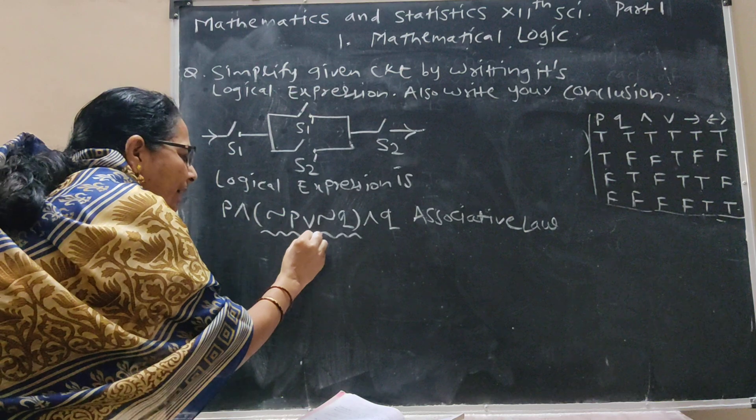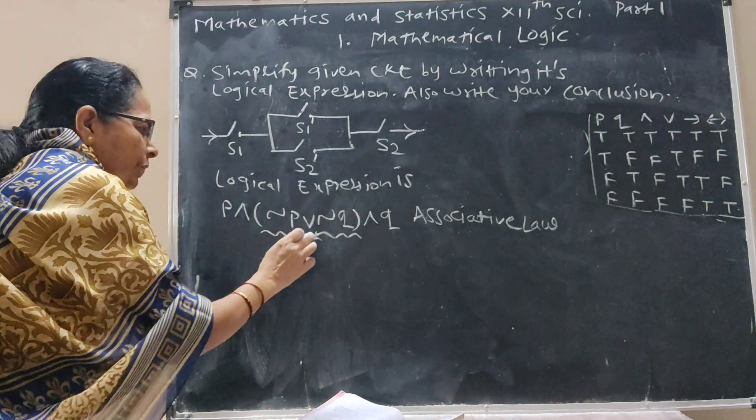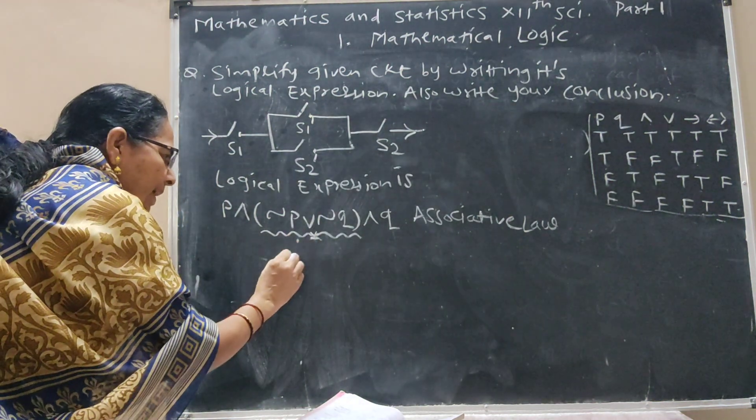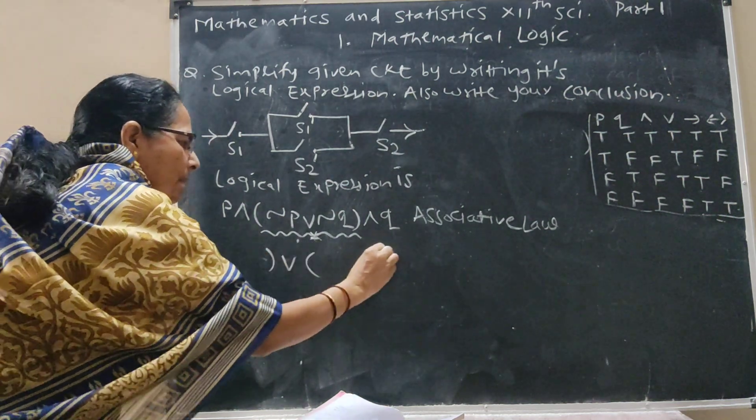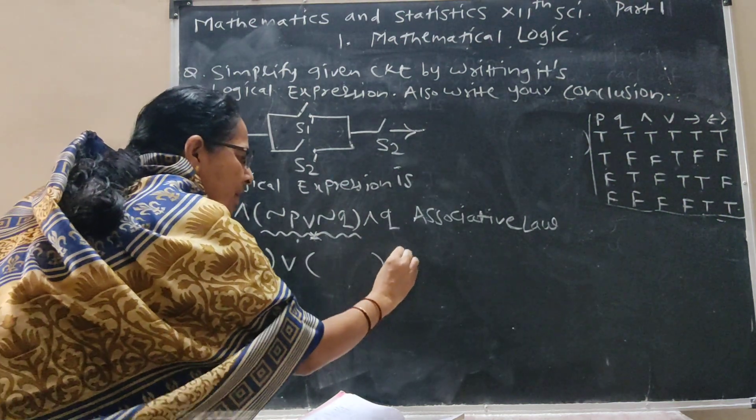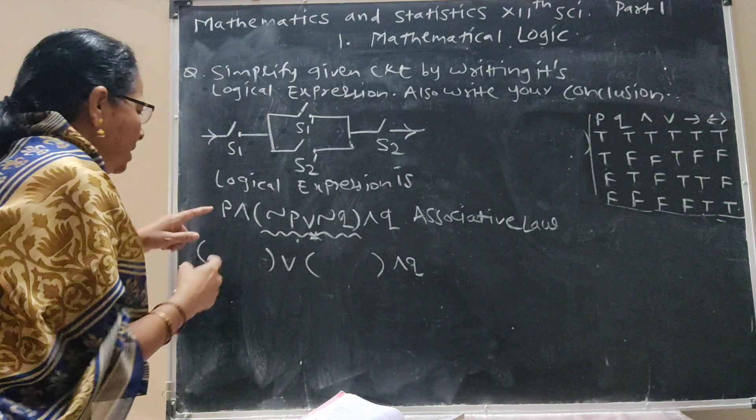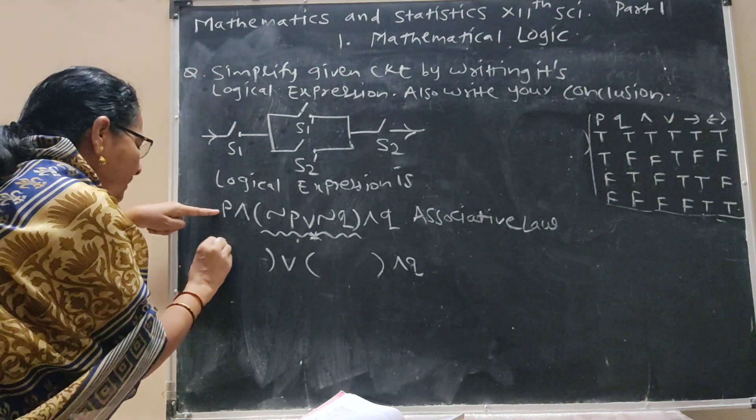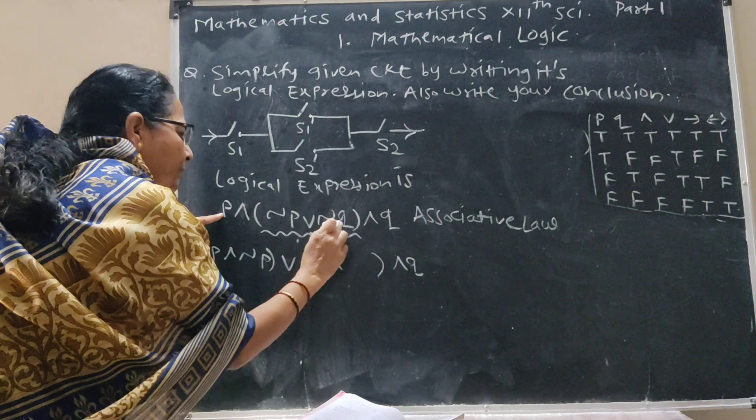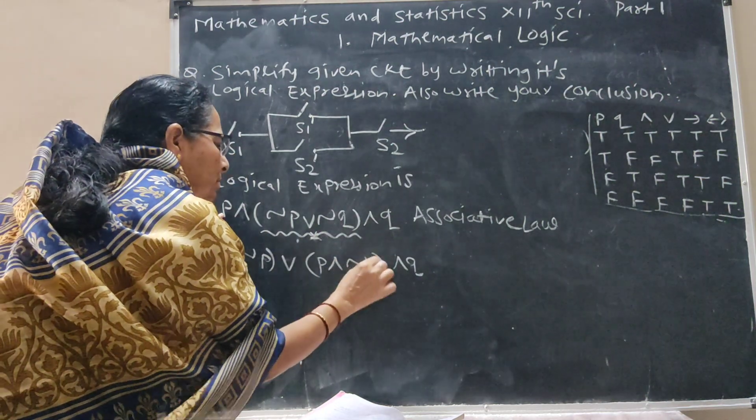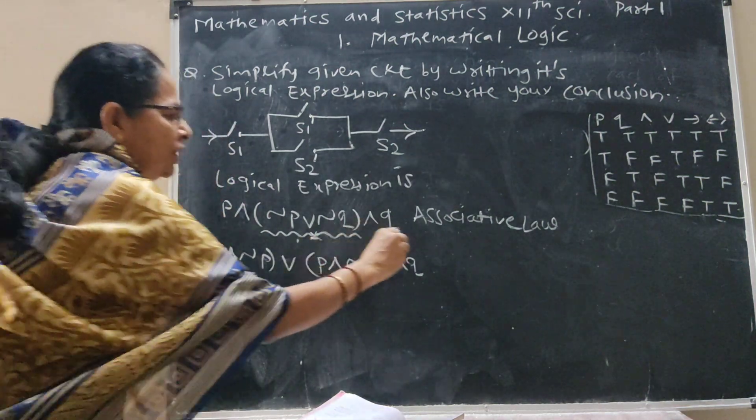Now apply here distributive law so that there are two brackets and Q term as it is. Now here is P and negation P, P and negation Q. This is distributive law.